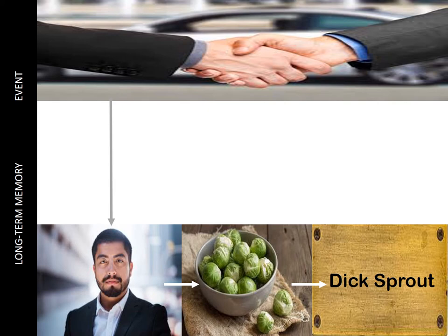Yet even this information may be forgotten. According to the notion of interference, recent material could interfere with our capacity to retrieve past material. Suppose we first learn the name Dick Sprout, then learn that someone else whose nose also resembles a sprout is called Russell Sprout. When we see Dick Sprout, the name Russell Sprout is likely to spring to mind because we met him more recently. This illustrates how learning recent material can impede the retrieval of previous information.